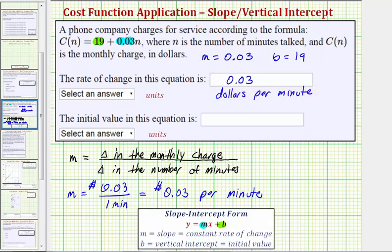Next, we're asked to determine the initial value, which again is the vertical intercept. So because we know B equals 19, as an ordered pair this would be the ordered pair 0 comma 19. Notice how when N is 0, the output of our function would be 19, and this is why this is called the initial or starting value.